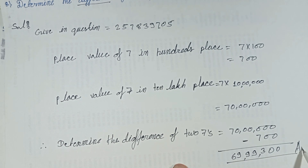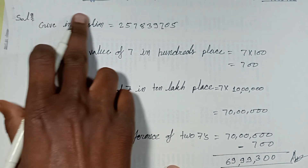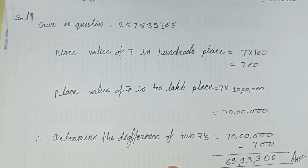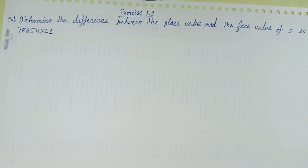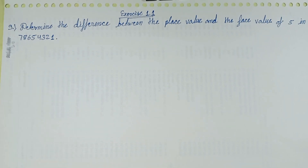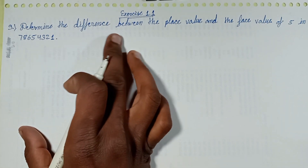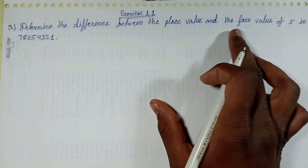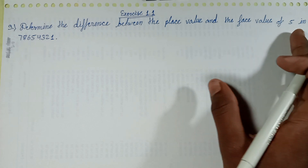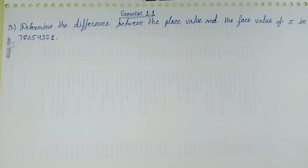This is the answer. The difference of the place values of the two 7s in the number 257839705 is 69,99,300. The next episode will cover: determine the difference between the place value and face value of 5 in these numbers.